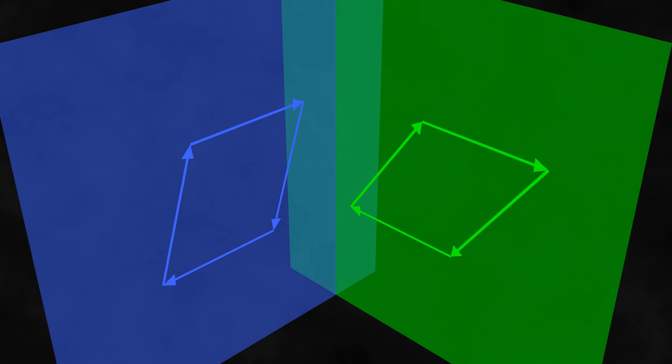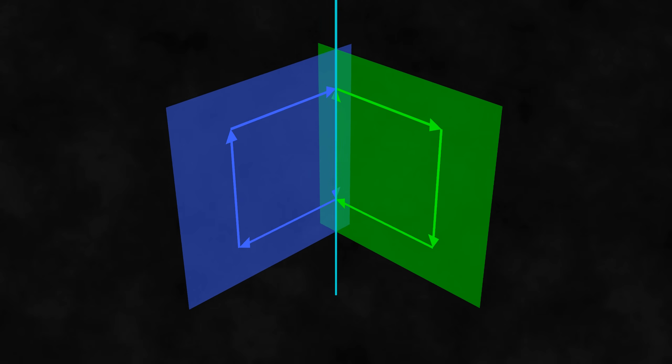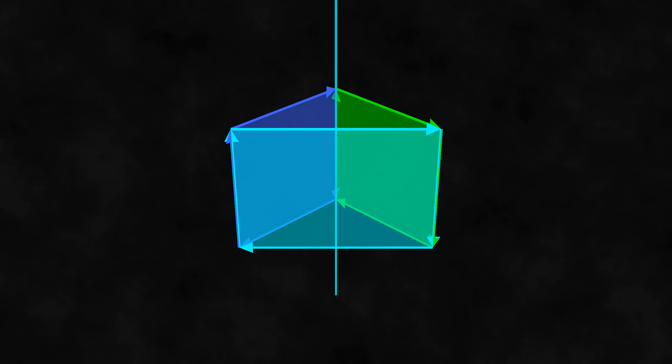Think about how we add bivectors in 3D. We look at the plane that each bivector lives in, find the common line between the two planes, and match the bivectors up along that line. Upon doing this, the rest of the process is straightforward.